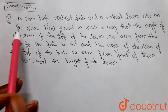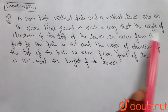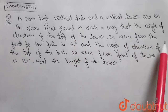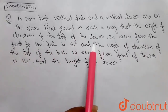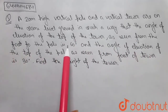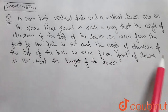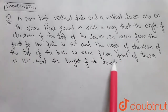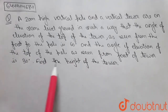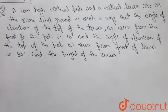A 20-meter high vertical pole and a vertical tower are on the same level ground, such that the angle of elevation of the top of the tower as seen from the foot of the pole is 60 degrees, and the angle of elevation of the top of the pole as seen from the foot of the tower is 30 degrees. Find the height of the tower.